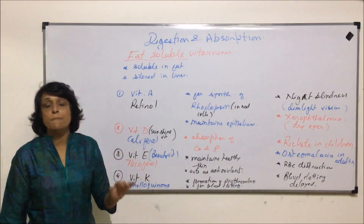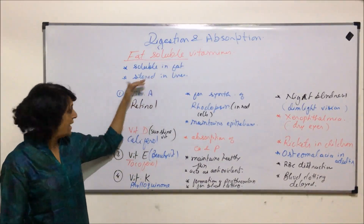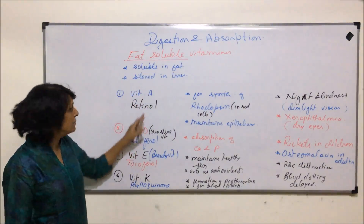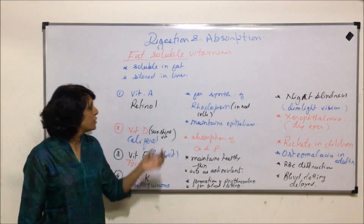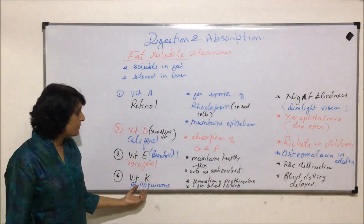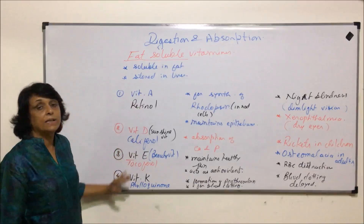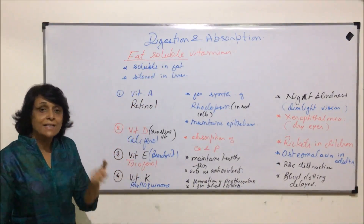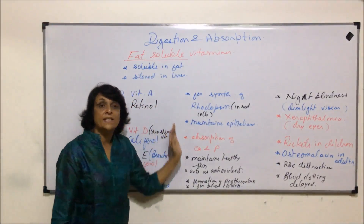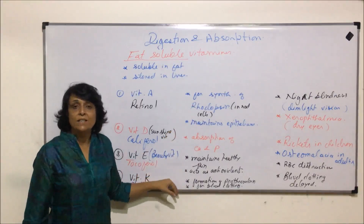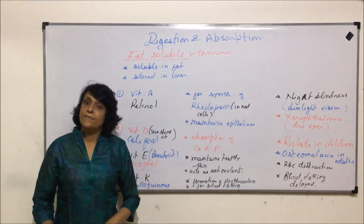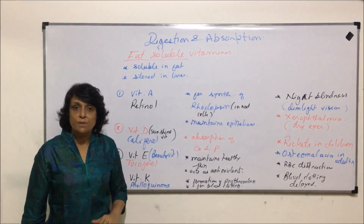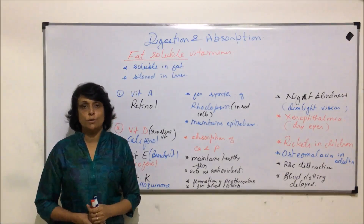So there are four main fat-soluble vitamins: A, D, E, and K. All of them have their technical names — retinol, calciferol, tocopherol, and phyloquinone. What is common about them is that they are fat-soluble and they are stored in the liver. Every vitamin is responsible for a specific function, and if we understand the function, it is easier to understand the deficiency symptoms. This concludes fat-soluble vitamins. Next, we will discuss water-soluble vitamins.